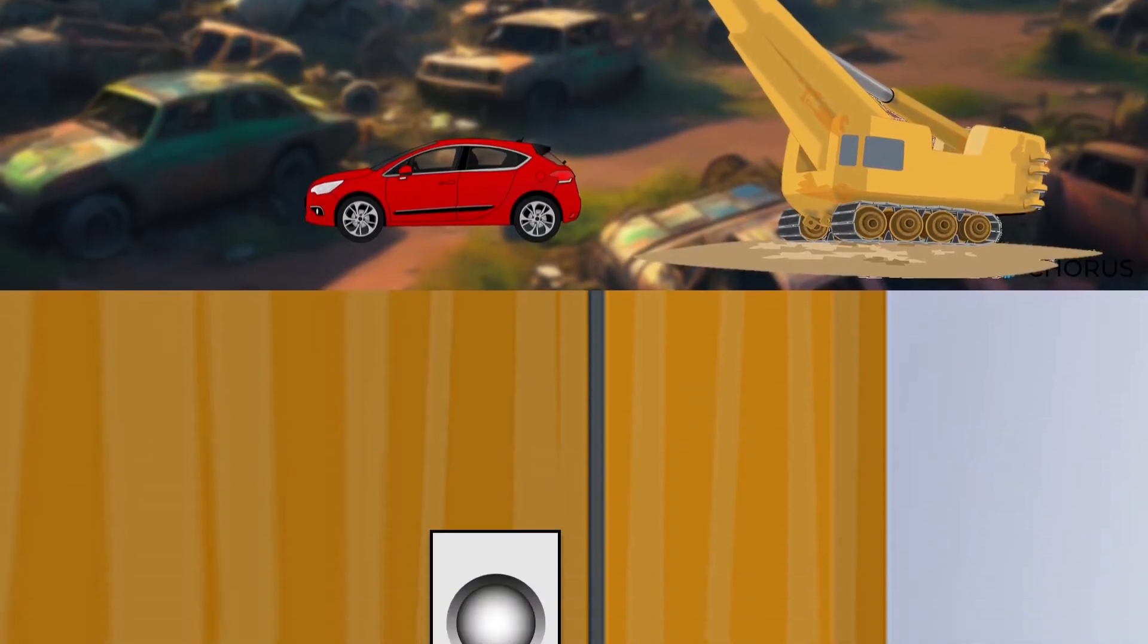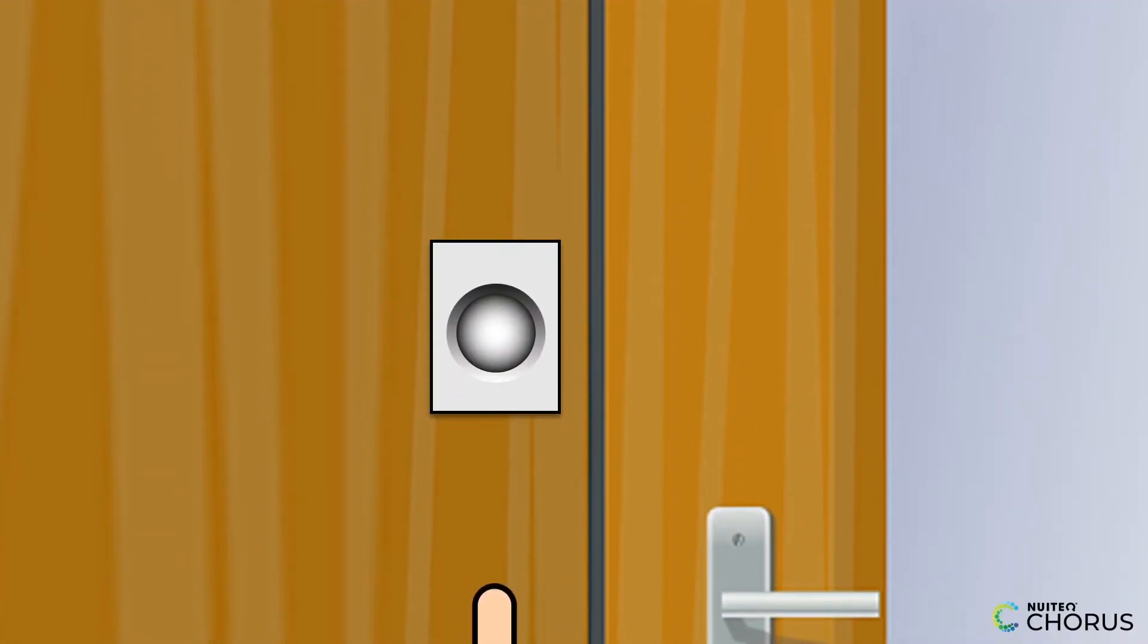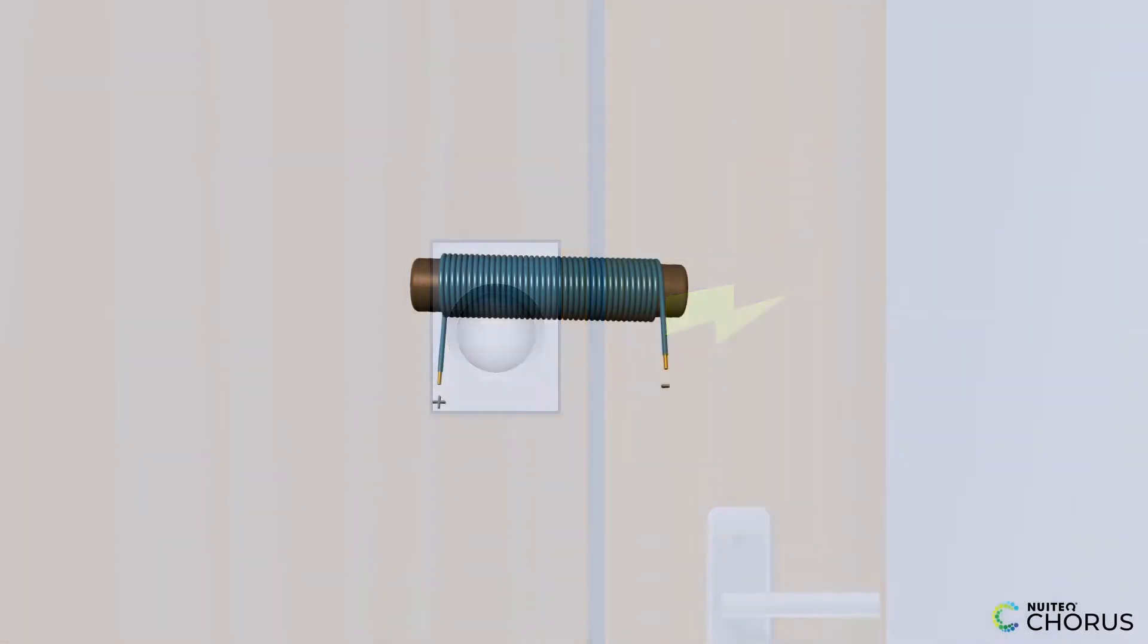Next, your doorbell. When you press the button, it sends an electric current to an electromagnet inside. This magnet pulls on a metal striker, which hits a bell or chime, creating that familiar sound. It's a small but clever use of electromagnets in everyday life.